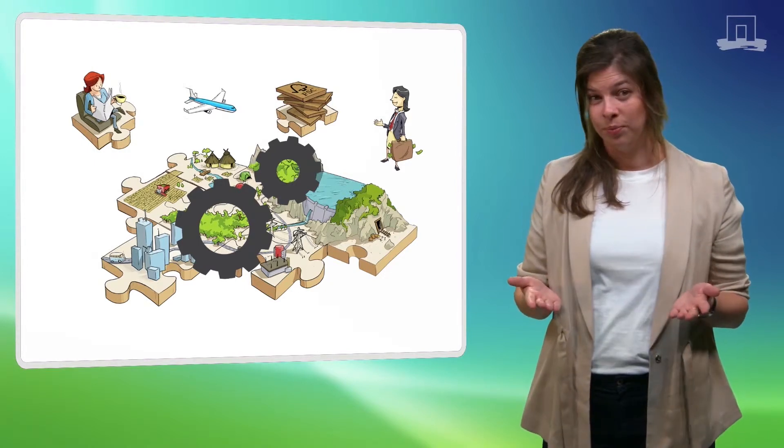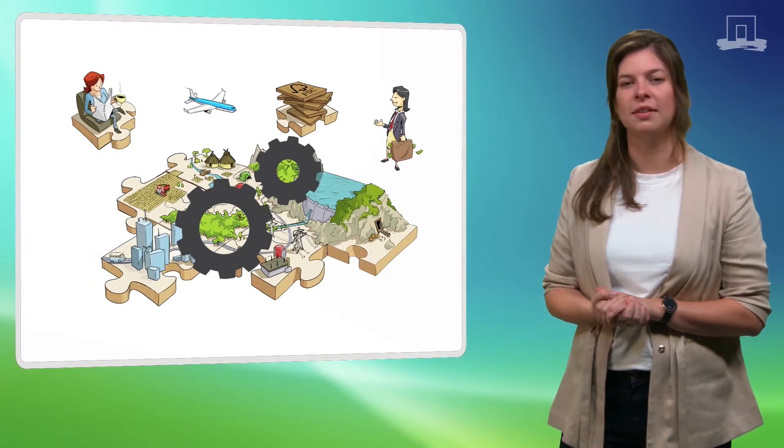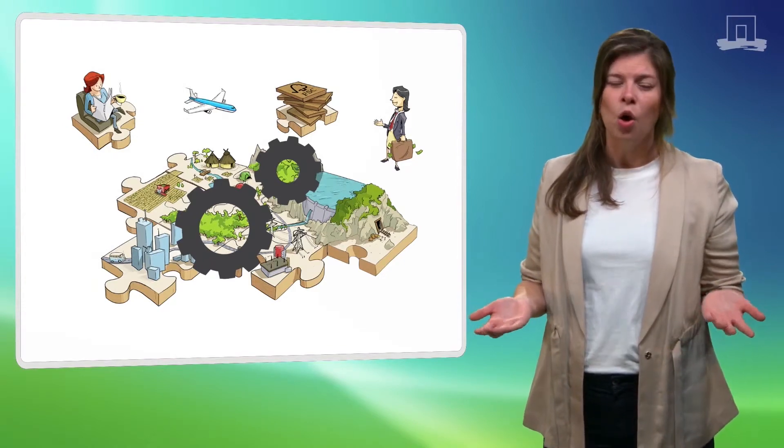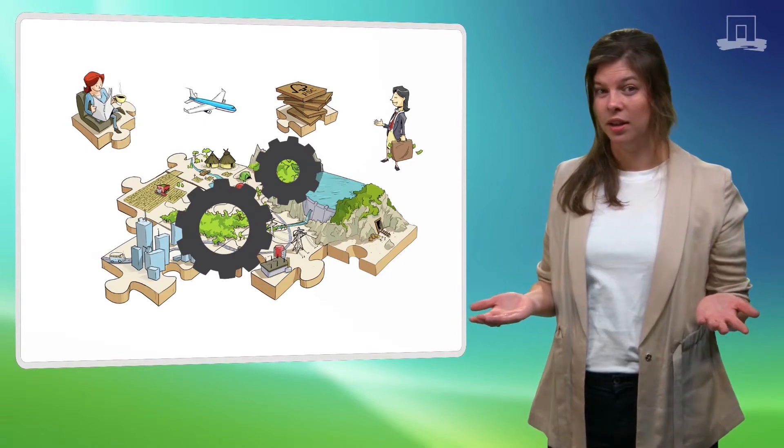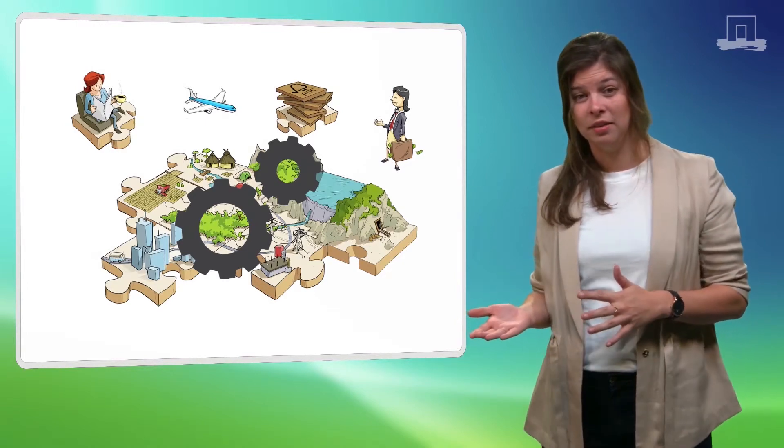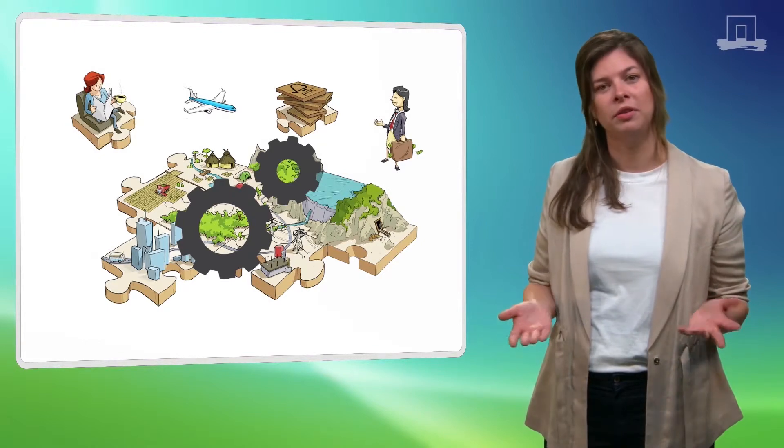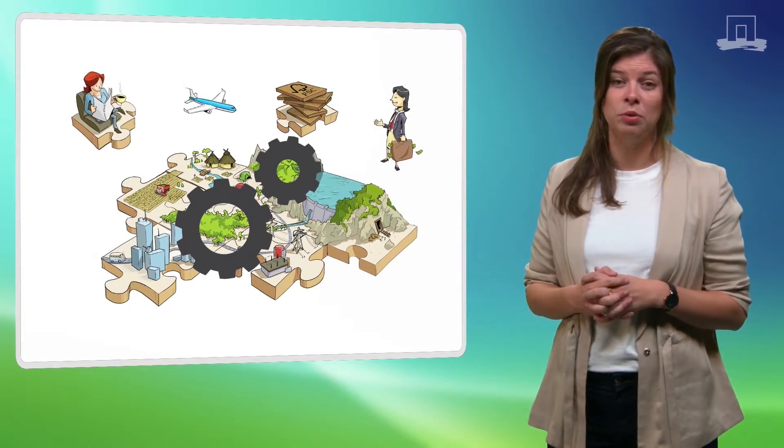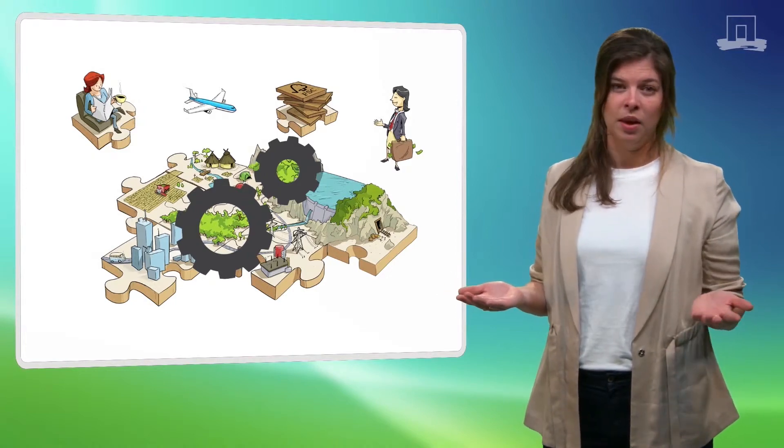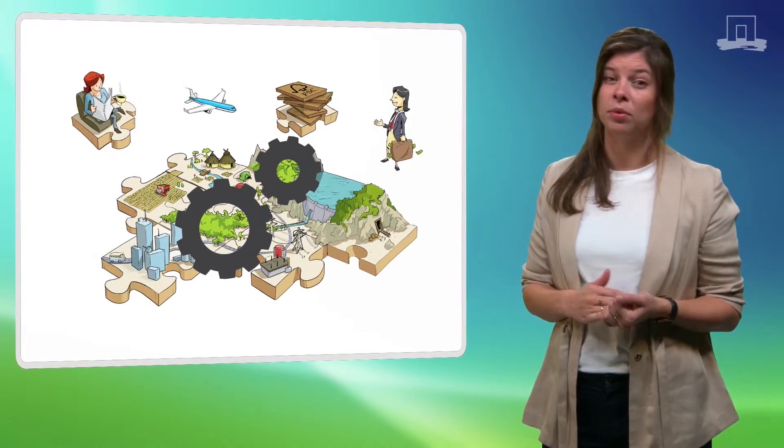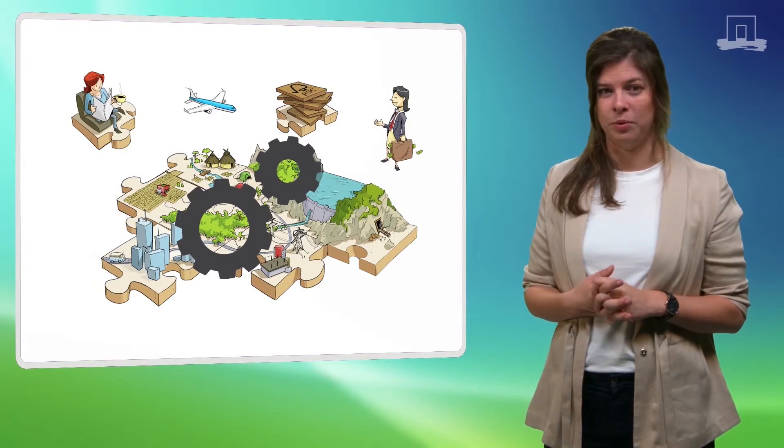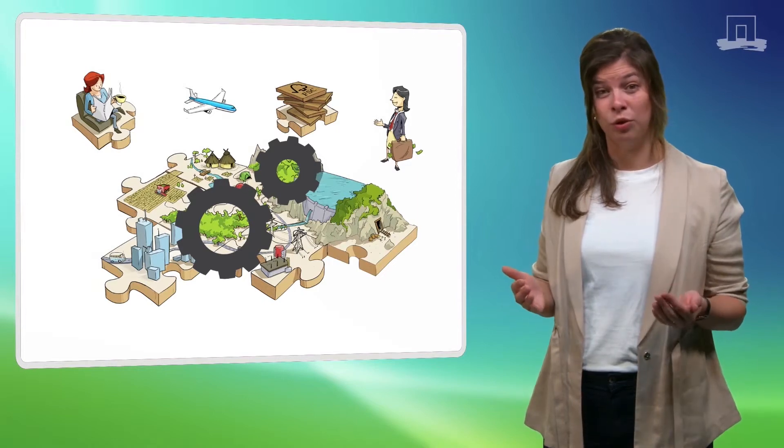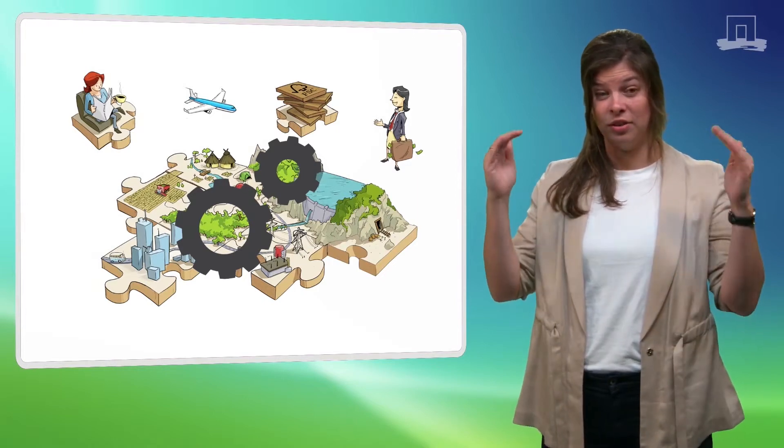For example, you observe people cutting down trees in your landscape. And you always have to ask yourself why. Who is cutting these trees and why? This might be triggered by external dynamics, such as changing forest policies. So the reason why people cut down trees could be related to a new zoning policy, which allows people to use timber and fuel wood for subsistence purposes. And this shows that landscapes are connected to external processes at other levels and scales.